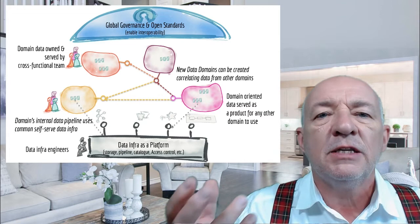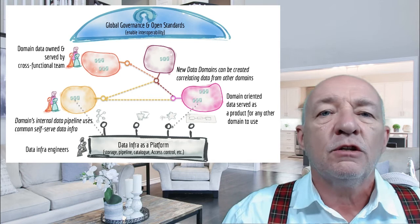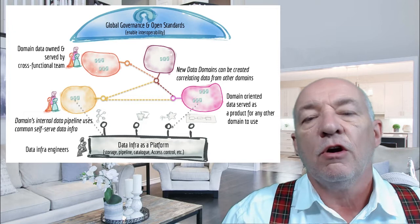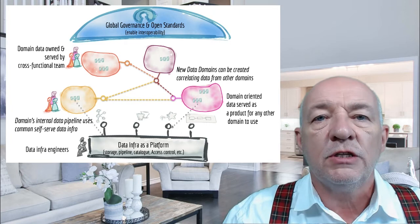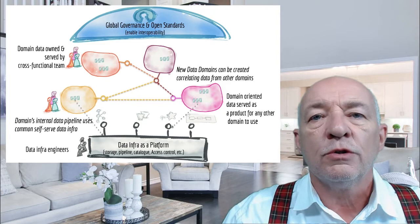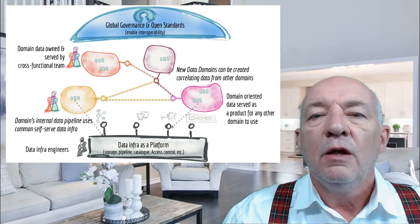We can see this in the diagram here. Governance, standards, and domain-driven design and delivery get top billing — all good things — while the usual stores and transformation functions are hidden in the infrastructure platform. The domain-driven emphasis in the picture leaves it largely to the reader to figure out that the underlying technical approach is based on microservices thinking.